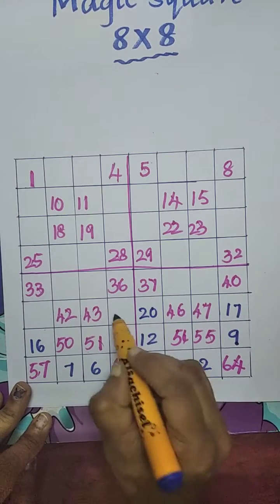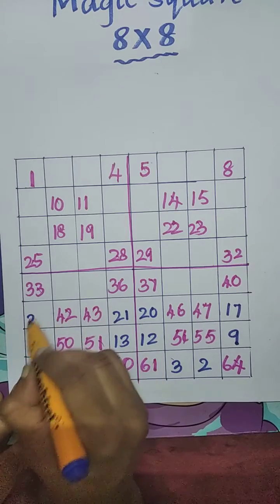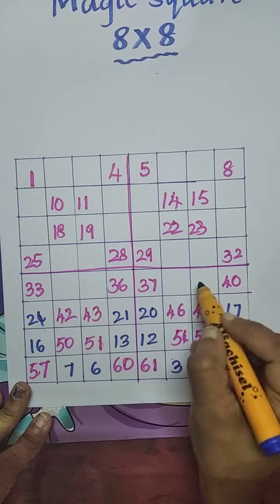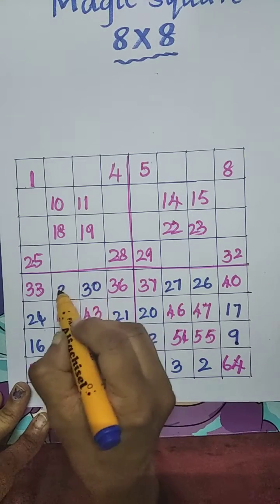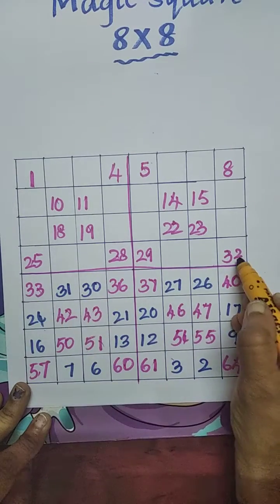18, 19, 20, 21, 22, 23, 24, 25, 26, 27, 28, 29, 30, 31, 32.